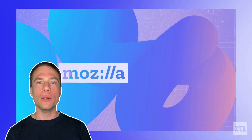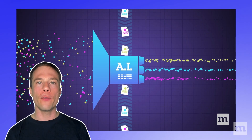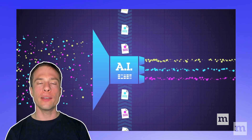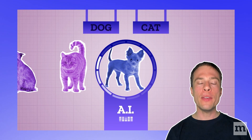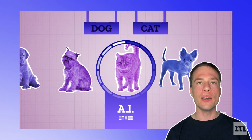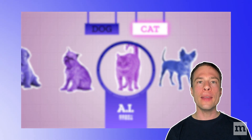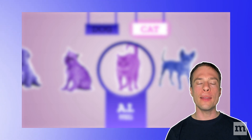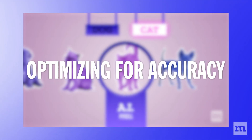For example, in a previous video in this series, my colleague Becca Ricks was explaining what an artificial intelligence system is. She gave the example of a system designed to recognize if a picture contains a dog or a cat. In this case, we say that the system is optimizing for accuracy.